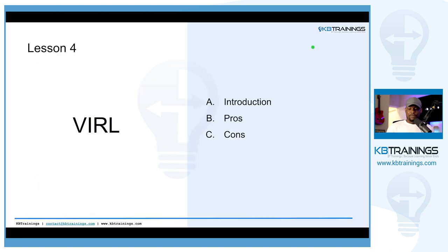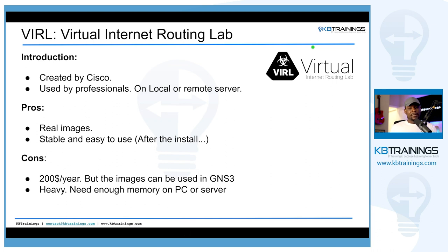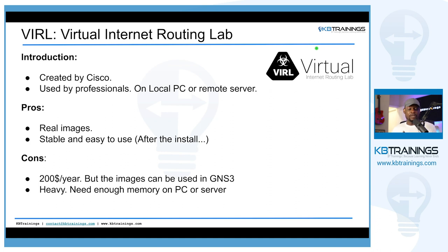VIRL is created by Cisco, just like Packet Tracer, but it's more advanced and used by professionals for labs and testing. You can use it locally or on a remote server. The pros are that you use real images just like GNS3. It's also very stable and easy to use after install — the install process might be a bit long, but once your topologies are running it's very stable. I also like that you can pre-configure your topology with the auto-config tool so when you deploy your simulation you only focus on the technology you're studying.